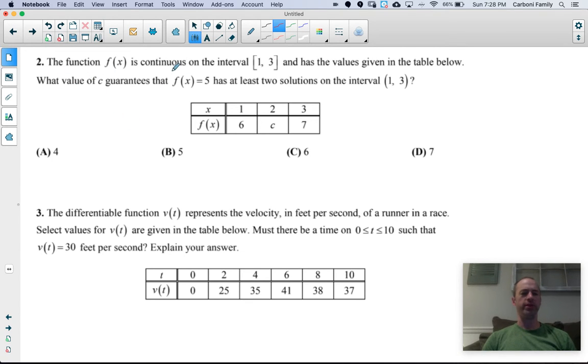First one is multiple choice. You have a function that is continuous on the interval 1 to 3. We have a few select values given, and we want to guarantee that F of X equals 5 twice on the interval 1 to 3. Which of these values for C would force that to happen? You could think of this graphically. I have a point at 1, 6, I have a point at 3, 7, and those two points are defined.